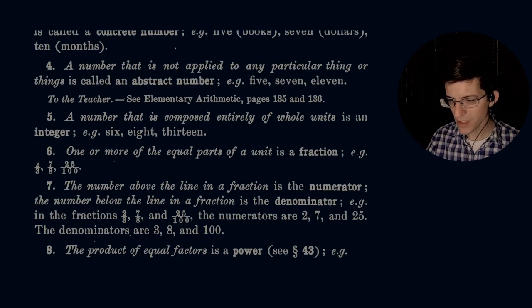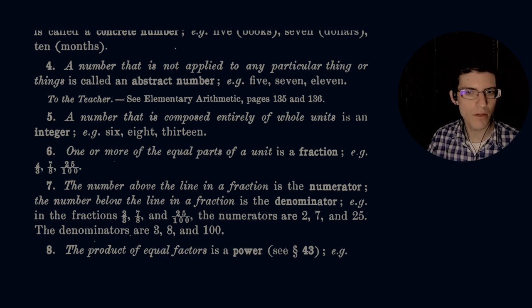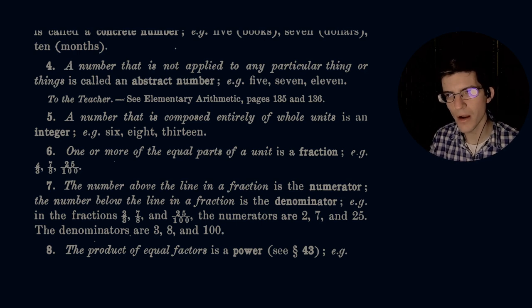Number five: a number that is composed entirely of whole units is an integer, e.g. 6, 8, 13. So these are numbers that can't be broken into smaller quantities or subdivisions. That is the realm of integers, actually called the set of integers.